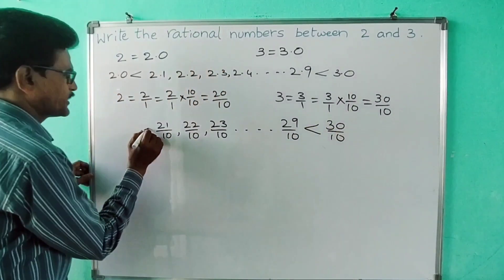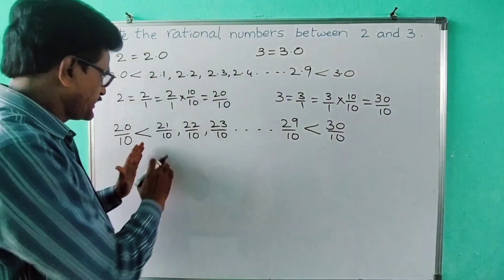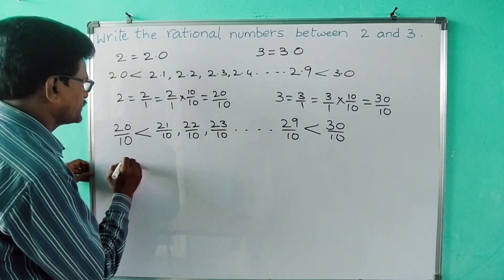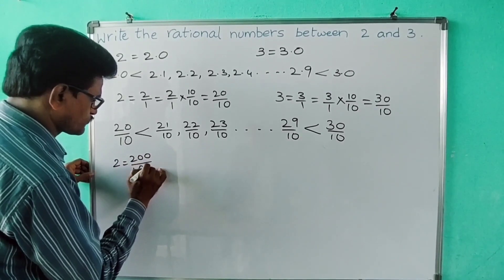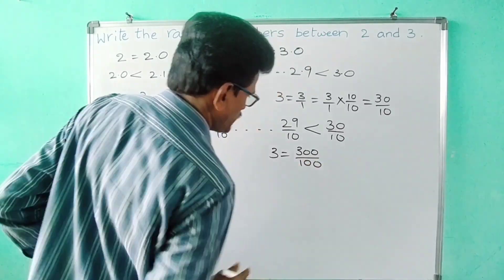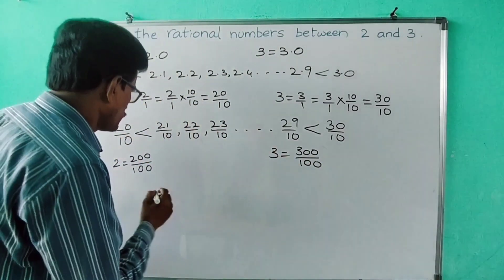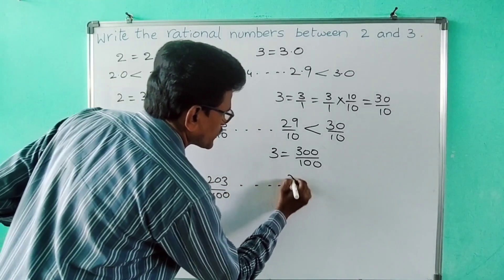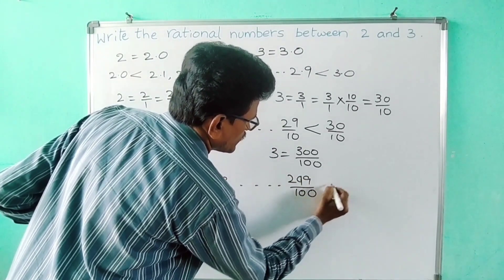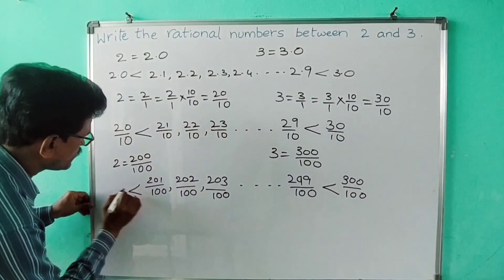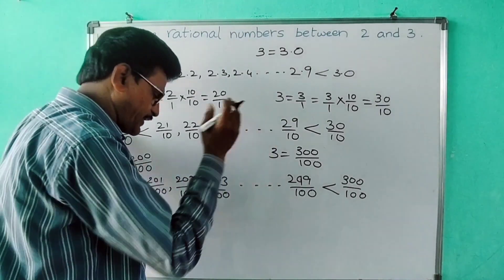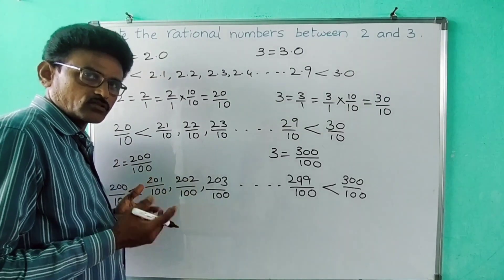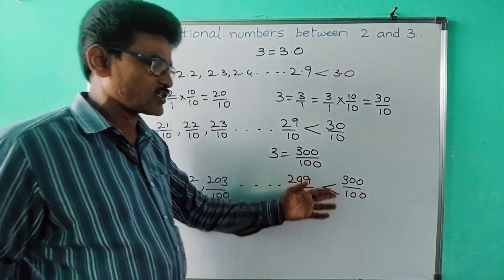All these are less than thirty by ten and greater than twenty by ten — that gives nine rational numbers in p by q form between two and three. If we need more numbers, write two as two hundred by one hundred and three as three hundred by one hundred. Then between these two you get two hundred one by one hundred, two hundred two by one hundred, up to two hundred ninety-nine by one hundred — nearly ninety-nine numbers. If you want still more, use two thousand by one thousand and three thousand by one thousand.